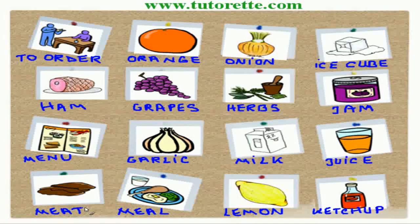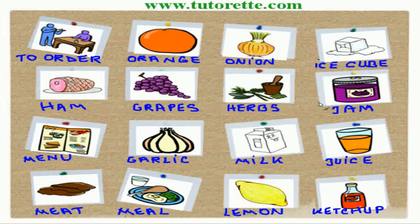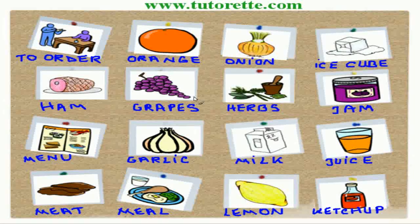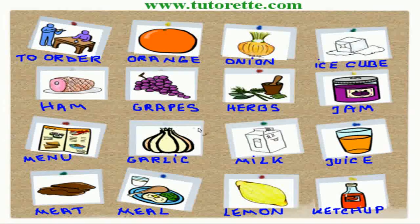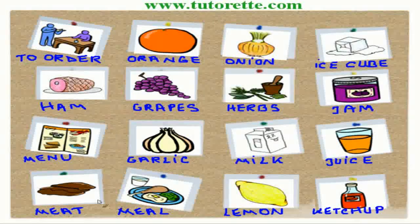Let's repeat the words one more time. To order, orange, onion, ice cube, jam, herbs, grapes, ham, menu, garlic, milk, juice, ketchup, lemon, meal, meat.